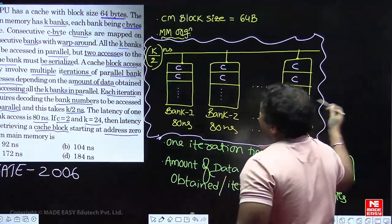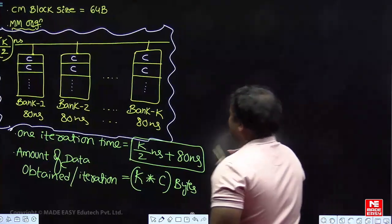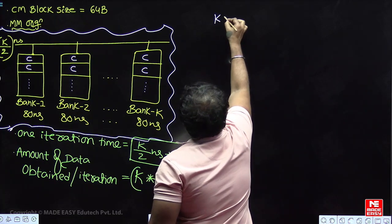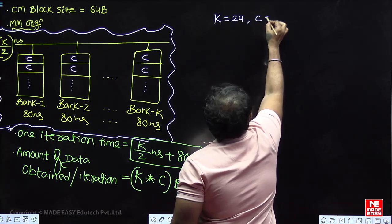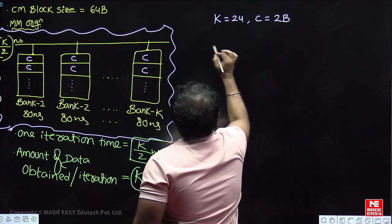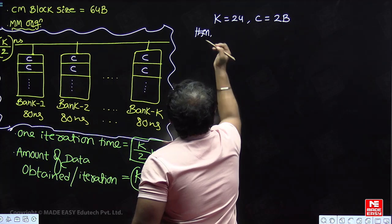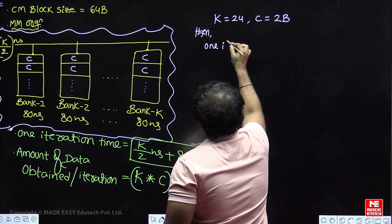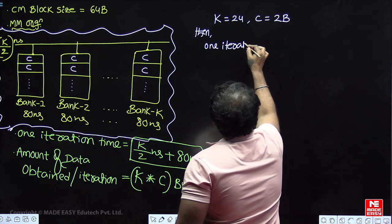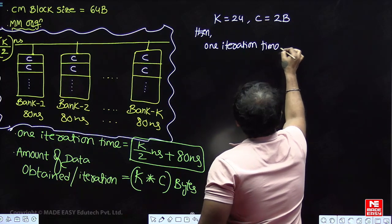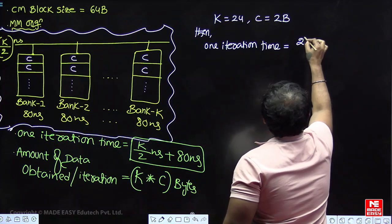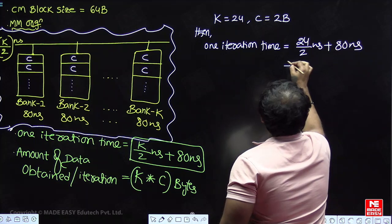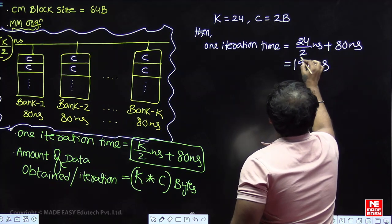K is equal to 24 and C is equal to 2 bytes. One iteration time equals decoder latency plus bank latency: (24/2) + 80 = 12 + 80 = 92 nanoseconds. Data obtained per iteration equals K × C = 24 × 2 = 48 bytes.